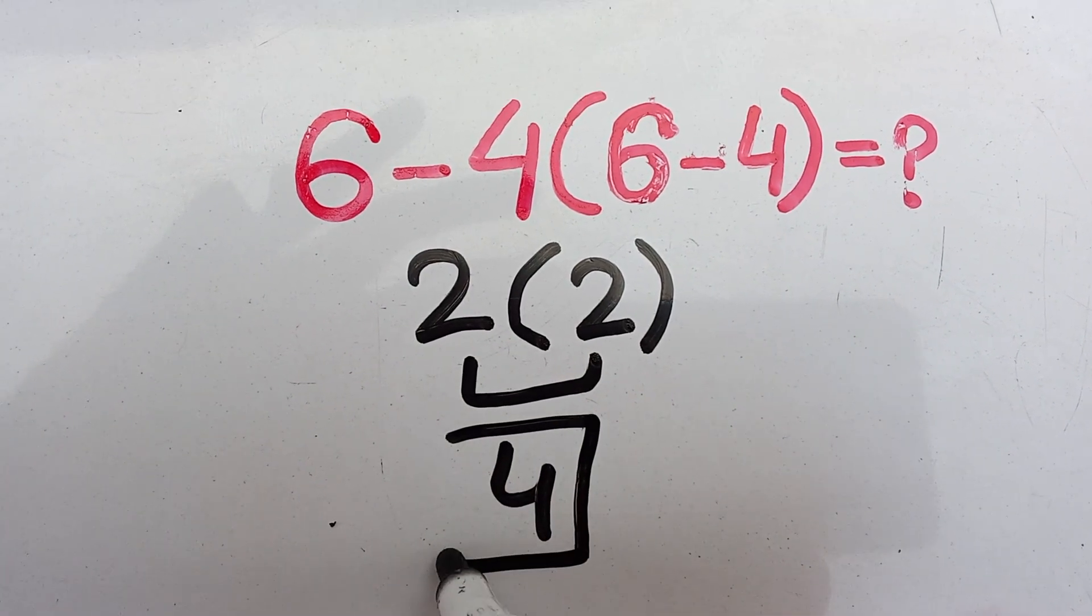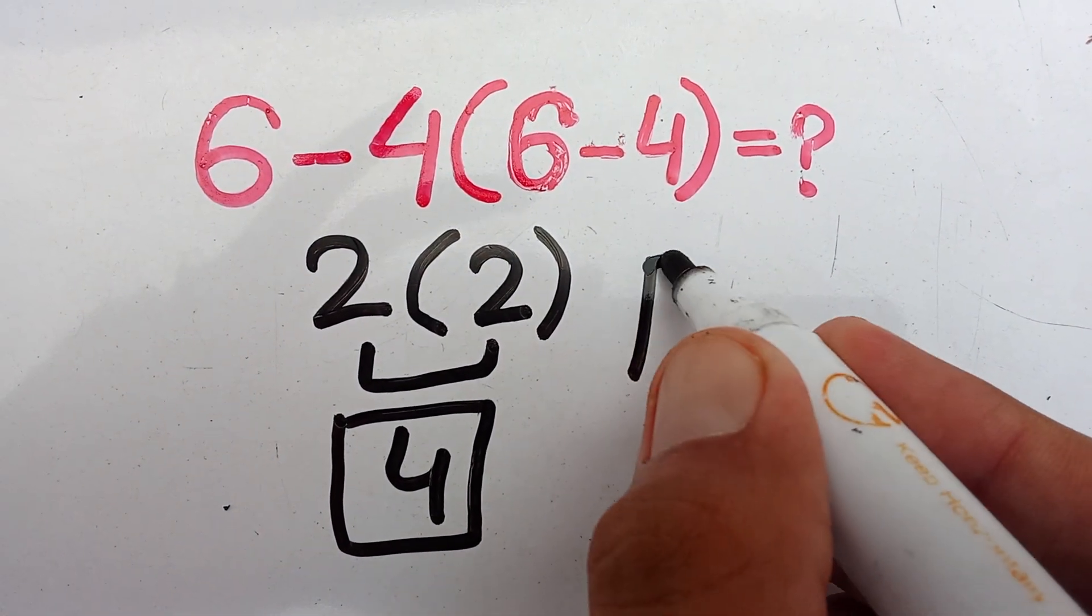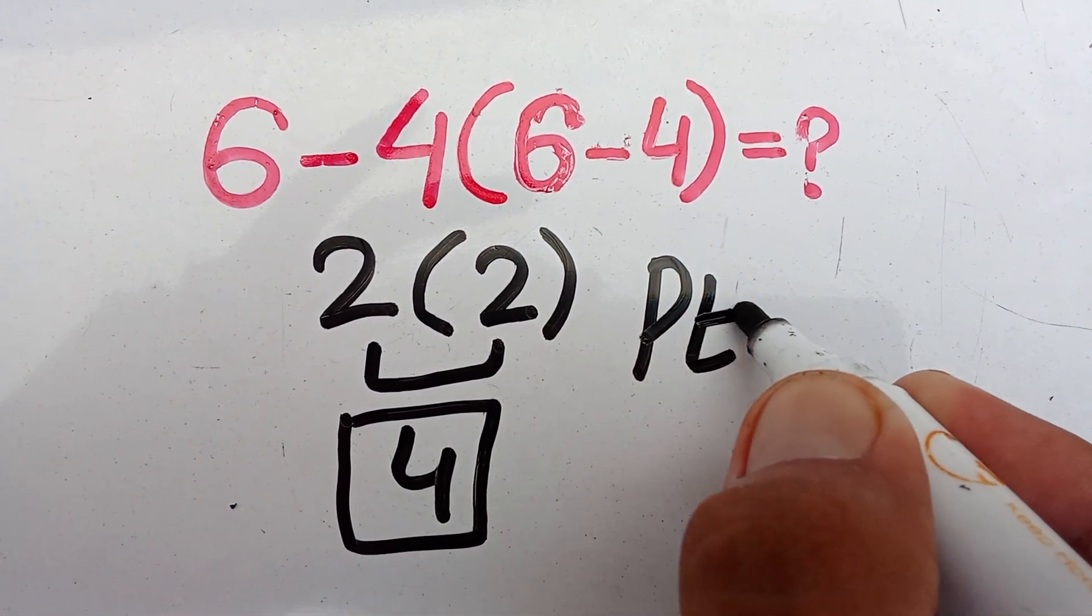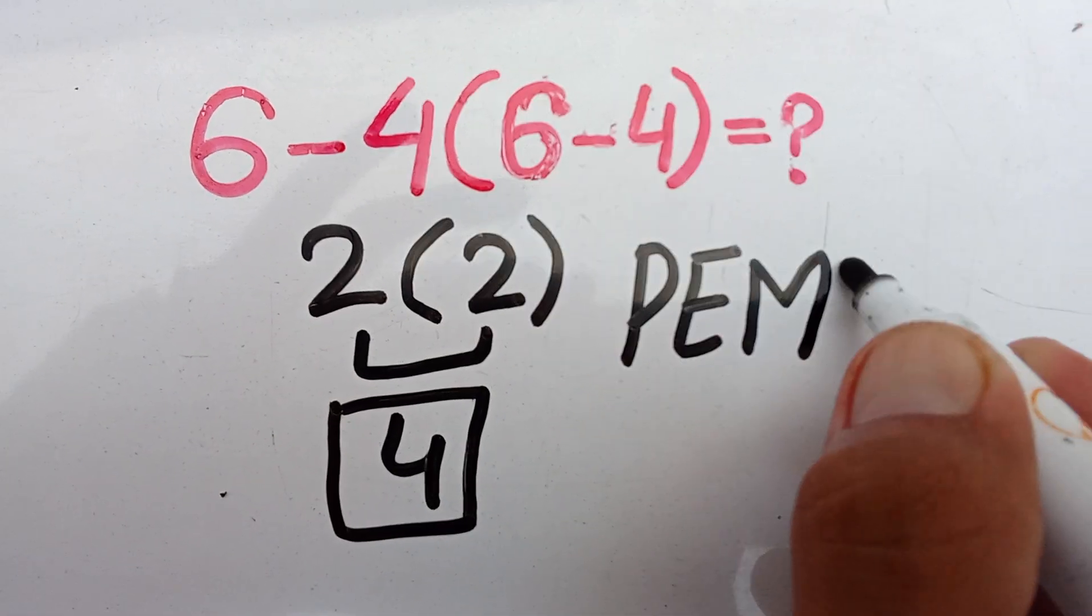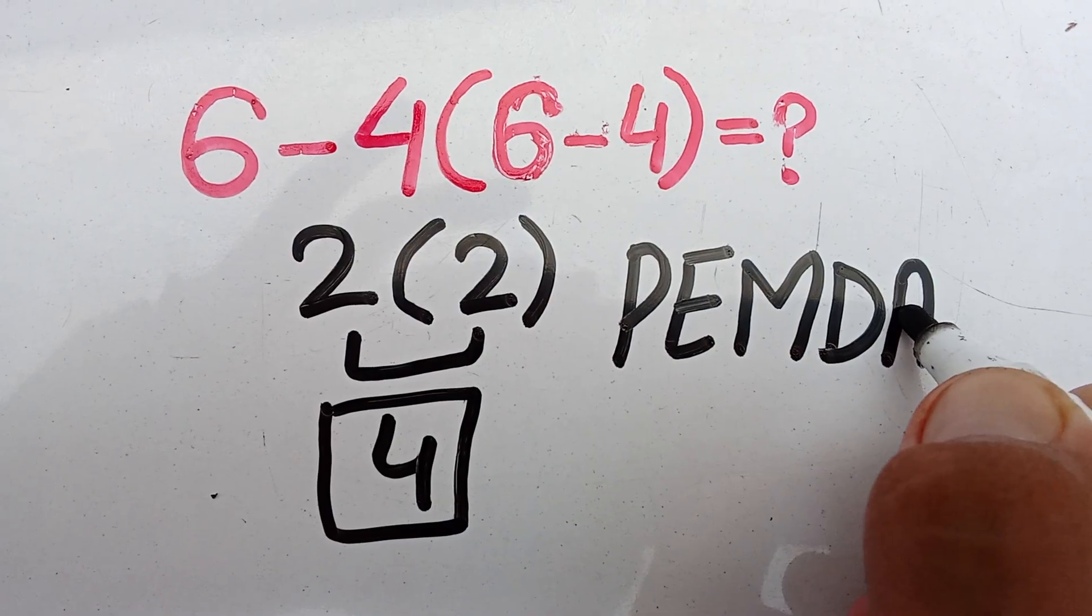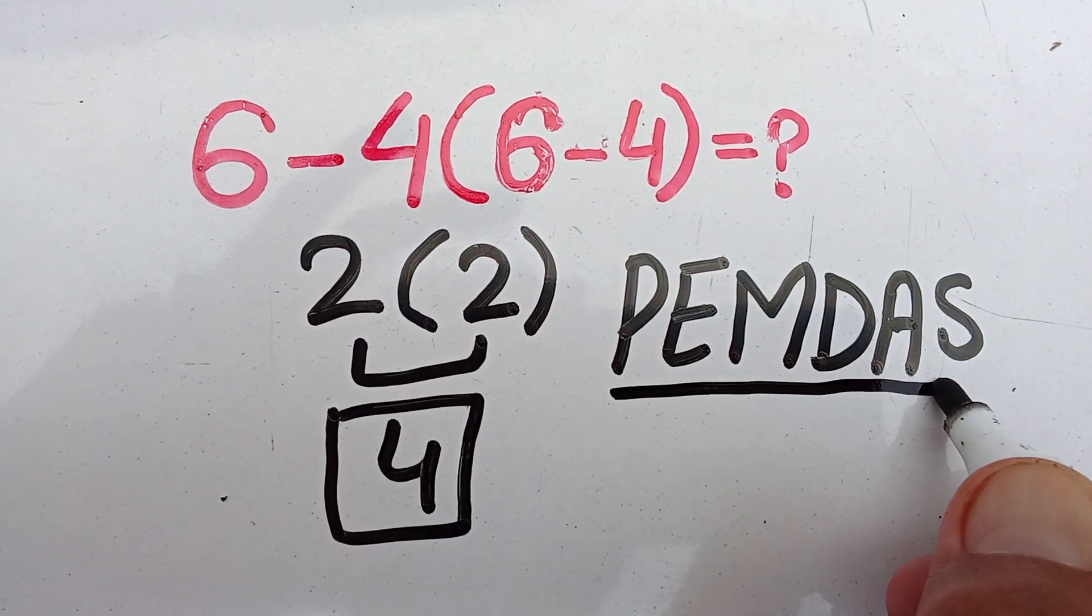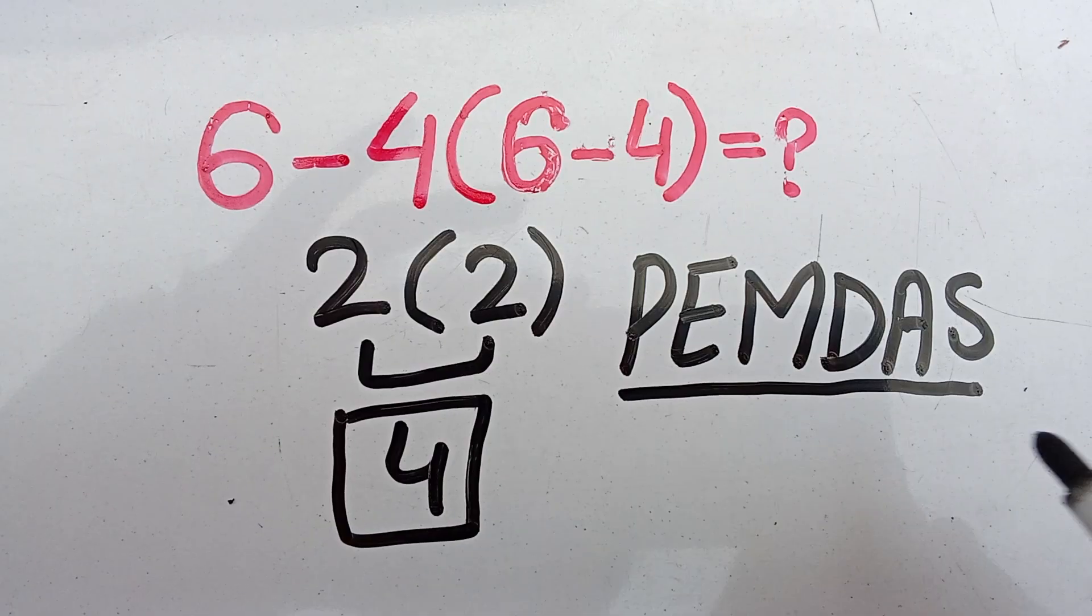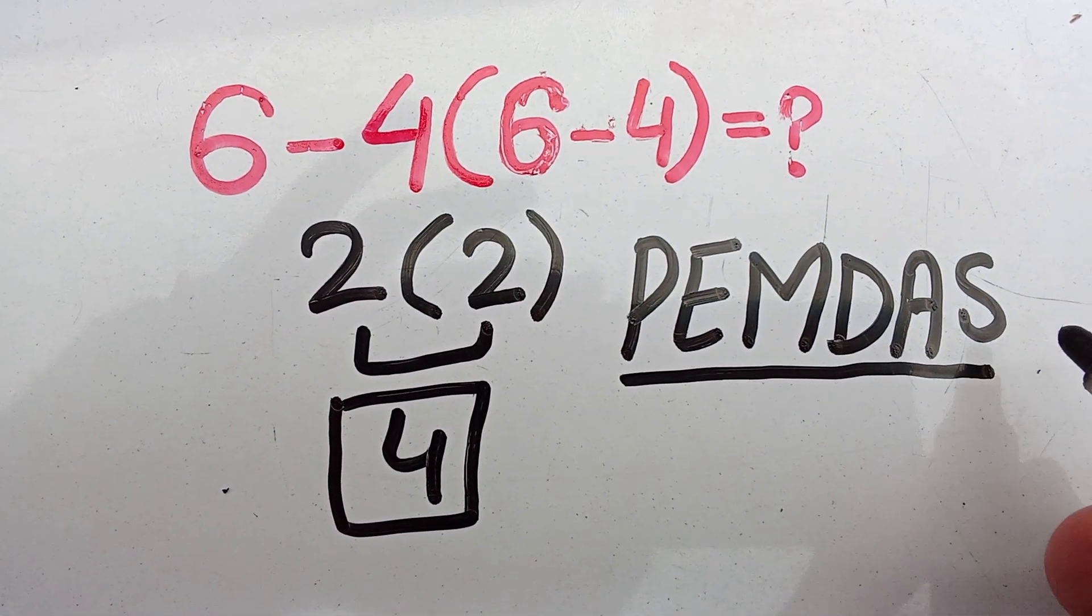The order of operation is PEMDAS. P stands for parenthesis, E stands for exponent, M multiplication, D division, A addition, and S subtraction. It means that multiplication and division have equal priority, addition and subtraction have equal priority, and we have to go left to right.